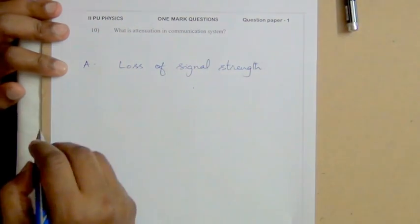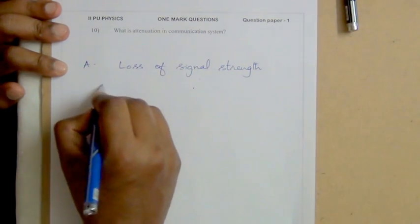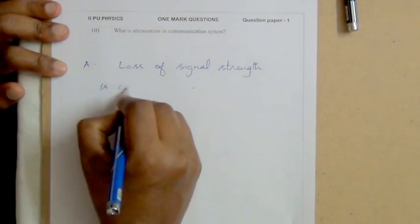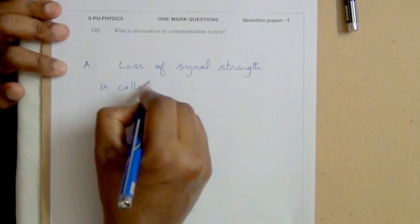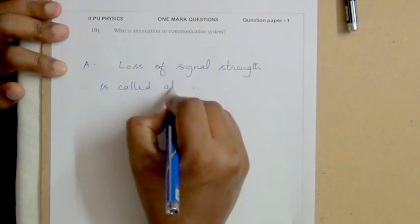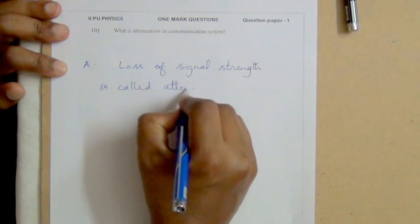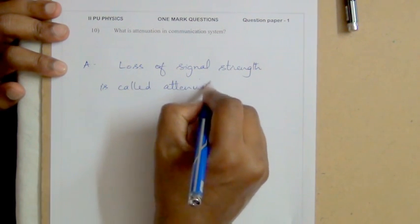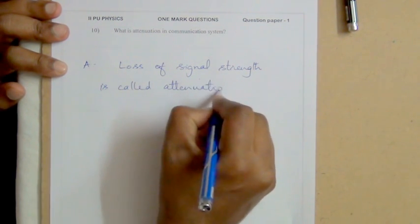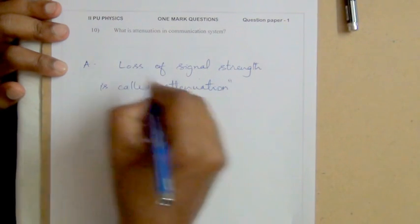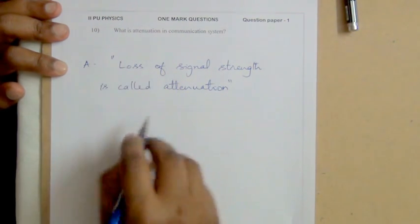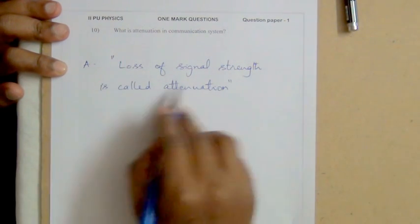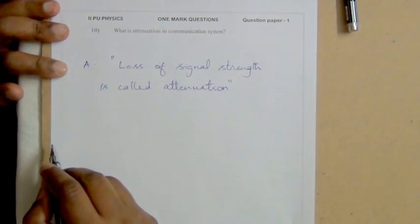What is attenuation in a communication system? Answer: loss of signal strength is called attenuation.